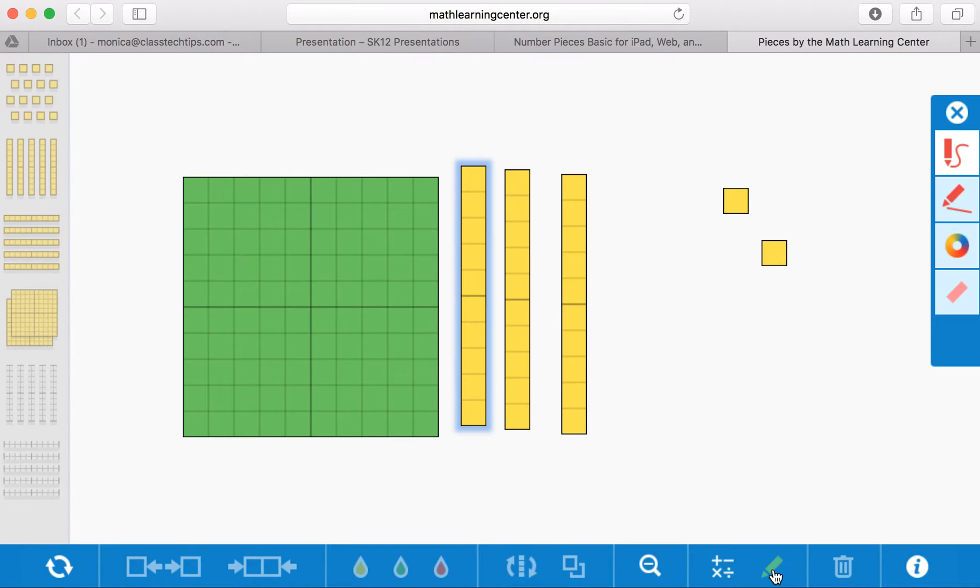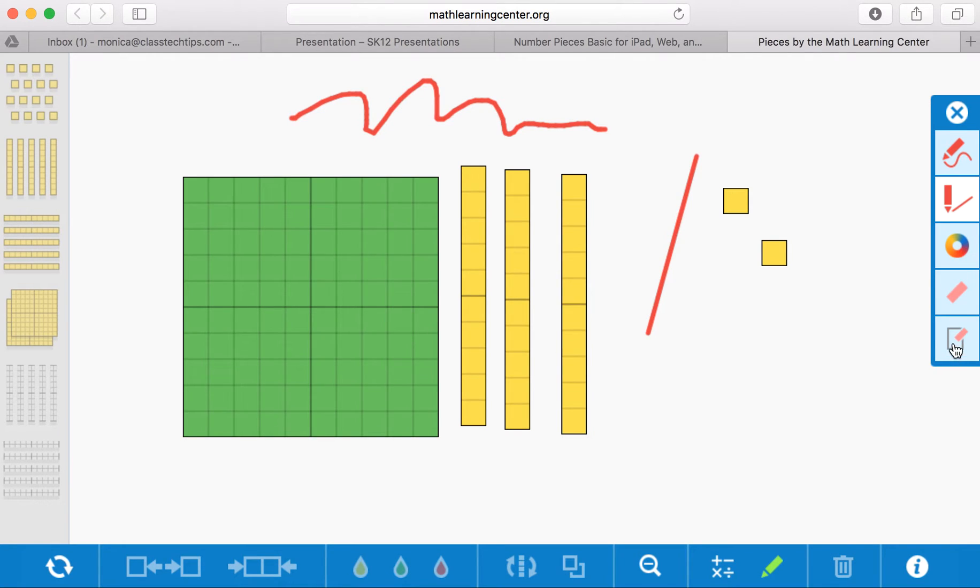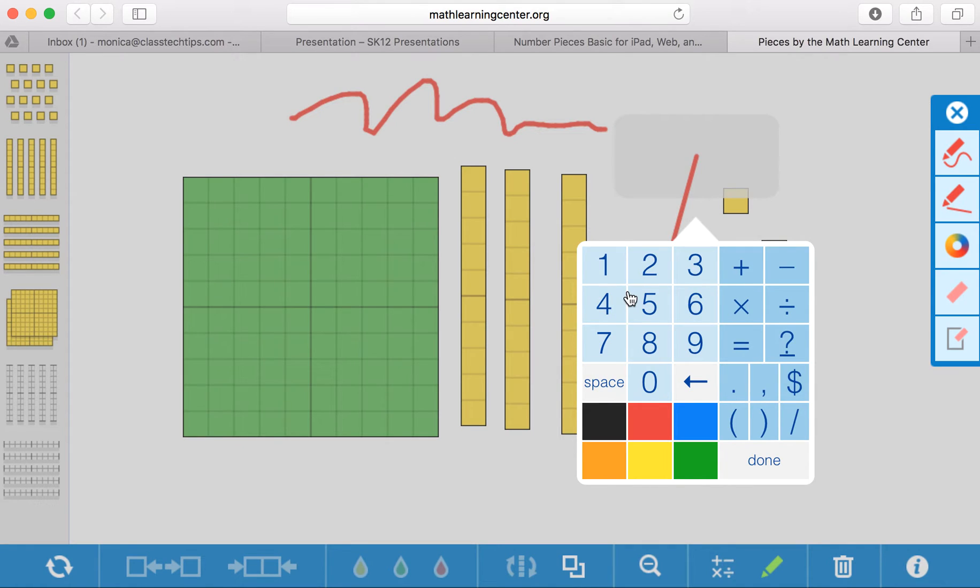Now here with the pencil tool, I can annotate anywhere on the screen. So I can draw freely, I can draw and it will snap into a line for me, I can change the color, you name it. I can also tap here if I want to put in an equation as well.